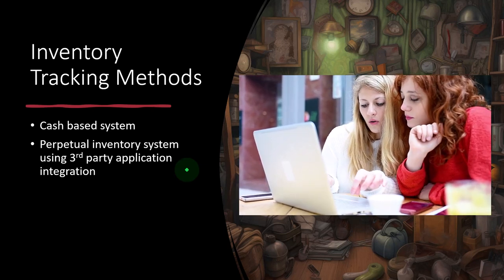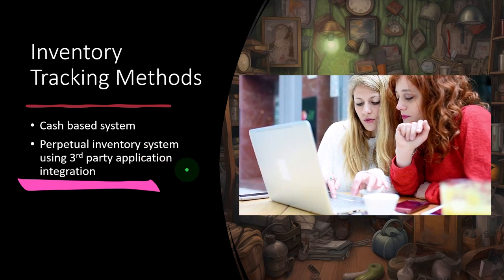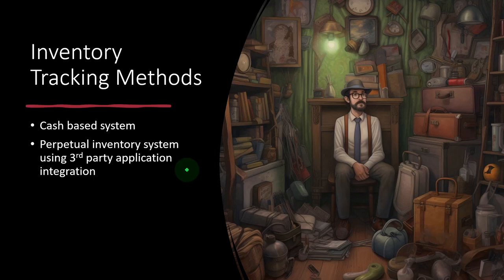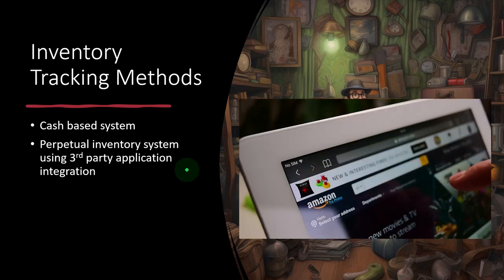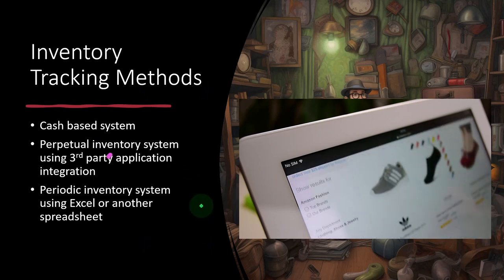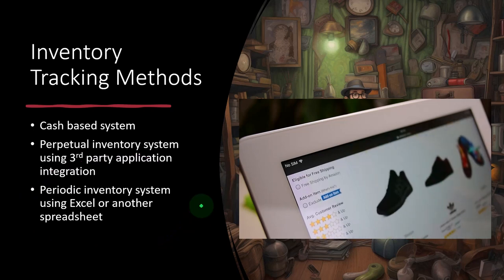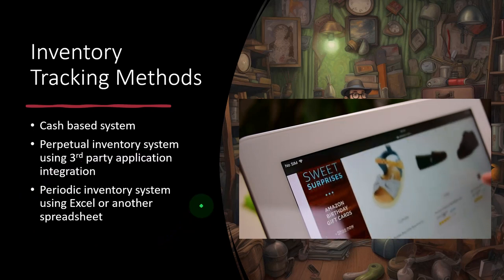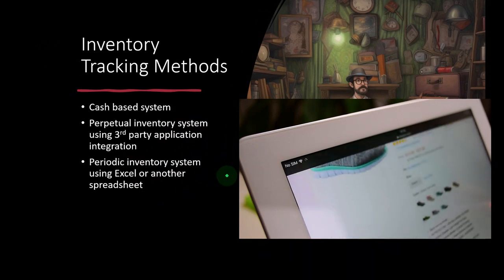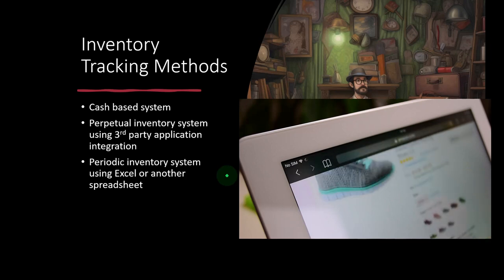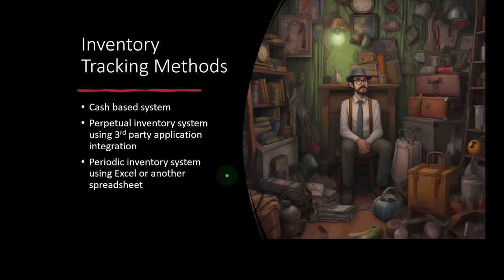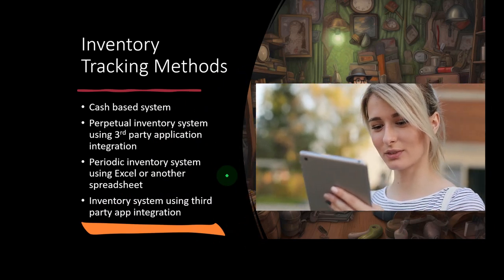We could have a perpetual inventory system using third-party application integration, meaning integrations that pull every transaction in from third-party platforms such as Shopify and Amazon into our QuickBooks system. We could also have a periodic inventory system using Excel or another spreadsheet — tracking units of inventory with a flow assumption like FIFO or weighted average, then making periodic adjusting entries for ending inventory and cost of goods sold rather than tracking actual units in QuickBooks Online.